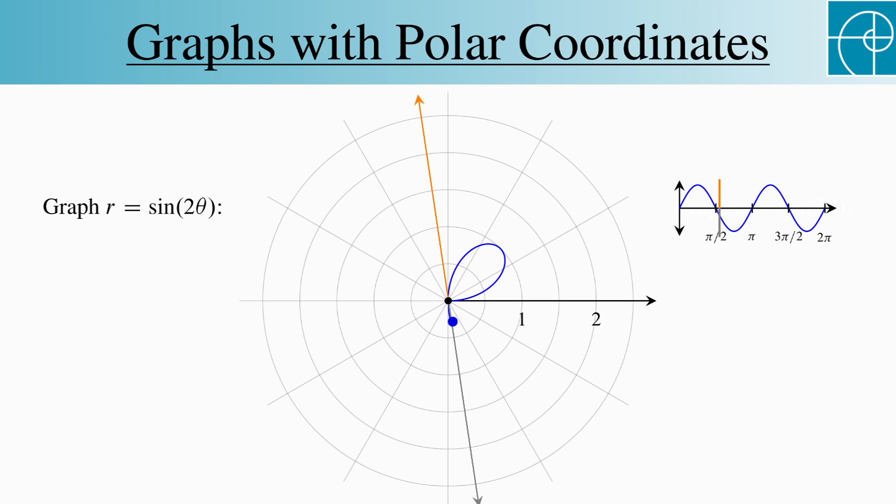Now, between pi over 2 and pi, sine of 2 theta goes from 0 to negative 1 and back to 0. So we trace another petal.